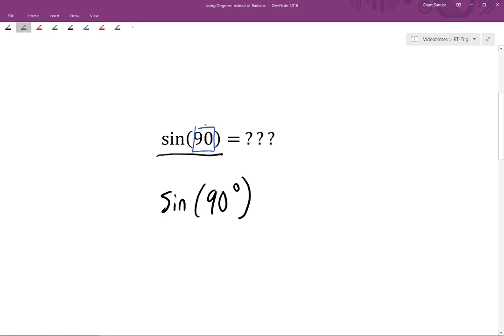So if we want to indicate a number of degrees, we need to put this degree sign with our angle measure within the input of our trigonometric functions.